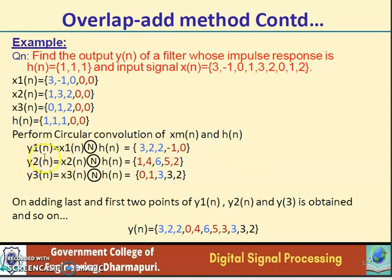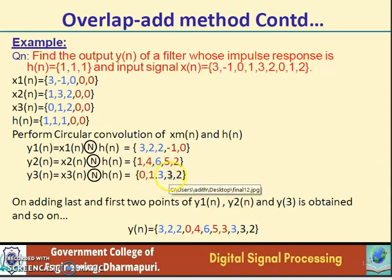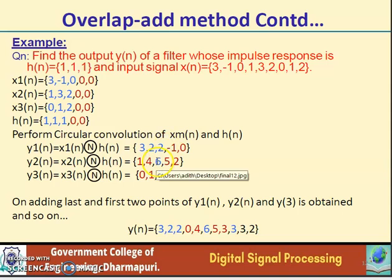The second block output y2(n) equals x2(n) N-point circular convolution with h(n), giving {1, 4, 6, 5, 2}. The third block output y3(n) equals x3(n) N-point circular convolution with h(n), giving {0, 1, 3, 3, 2}. Now we have each output block sequence y1(n), y2(n), and y3(n), and we are going to form the final y(n) from these.